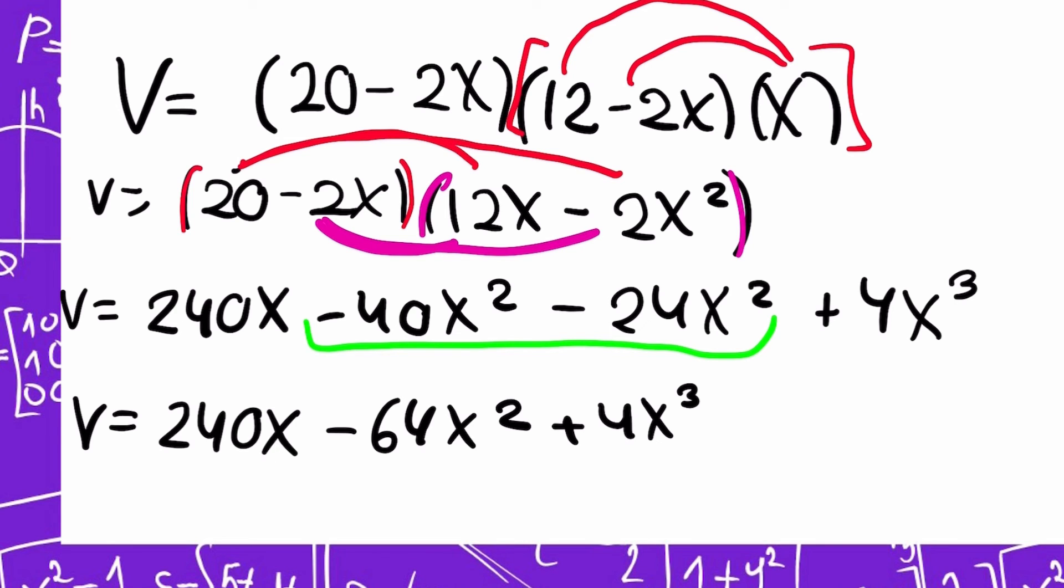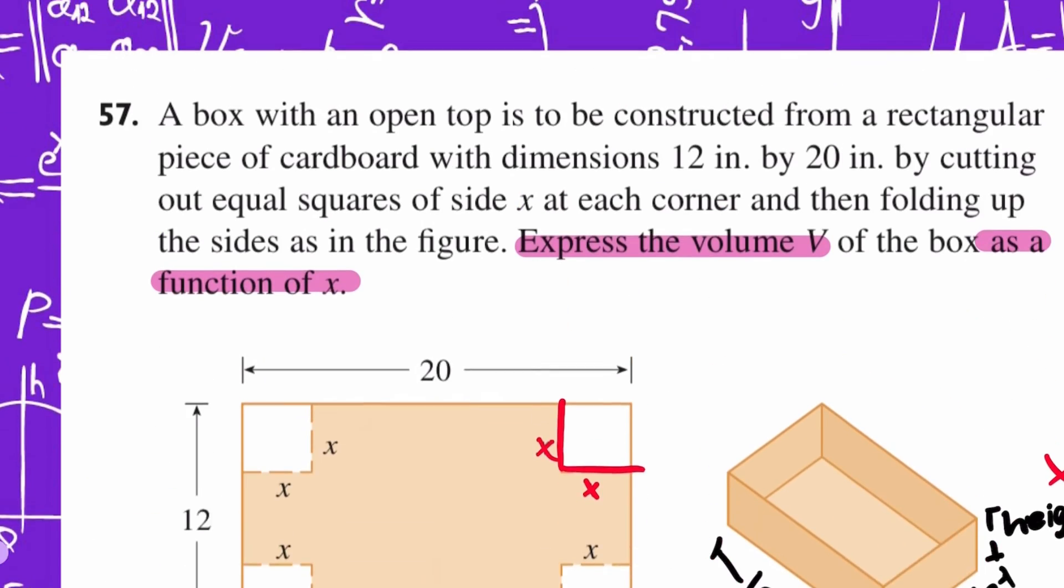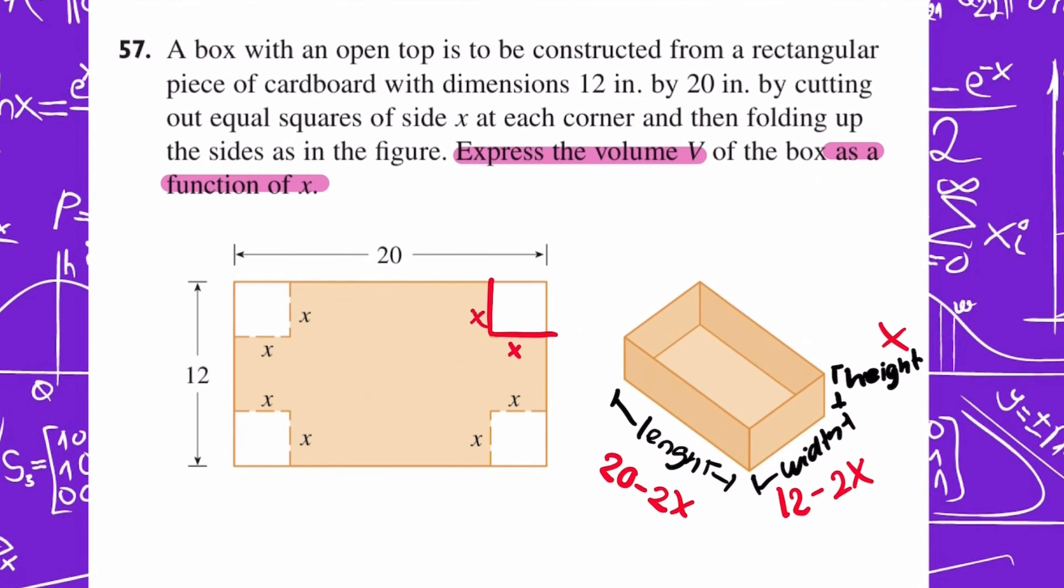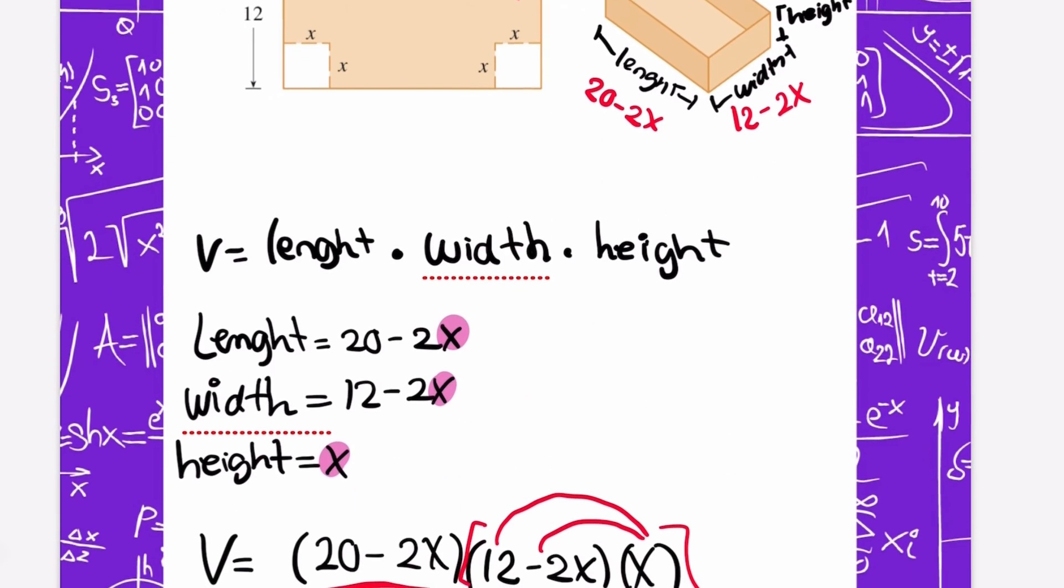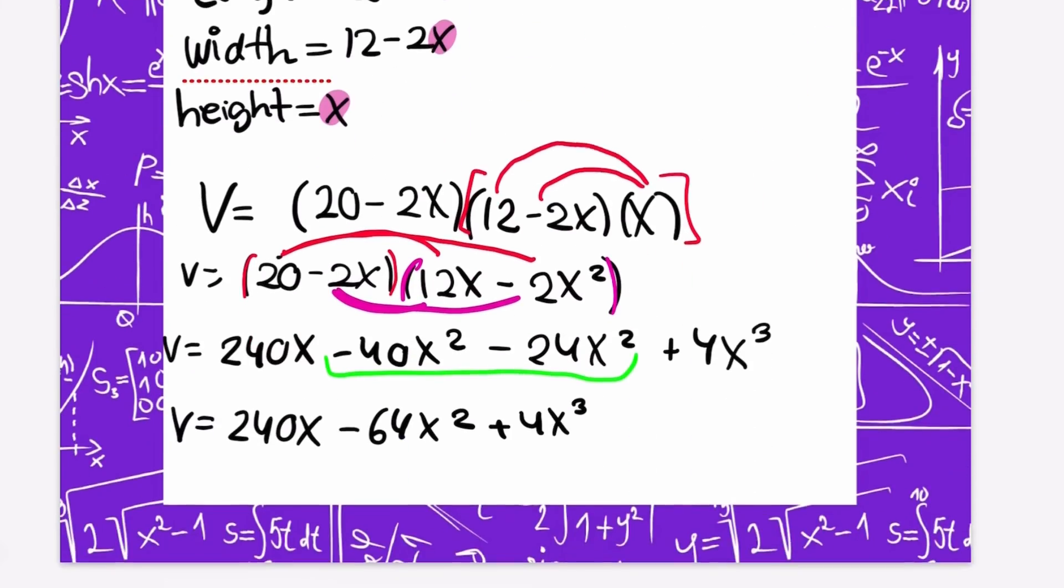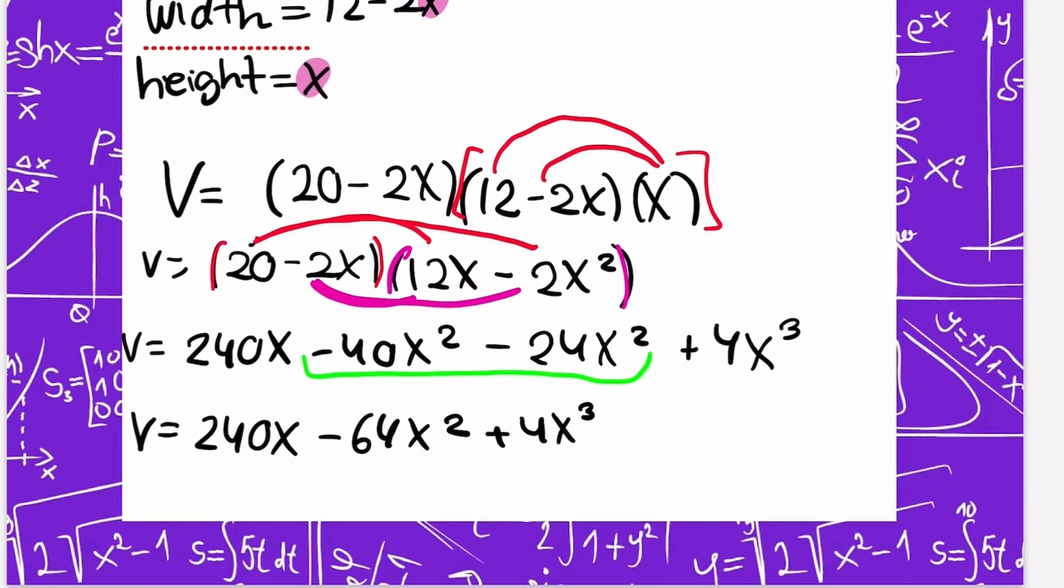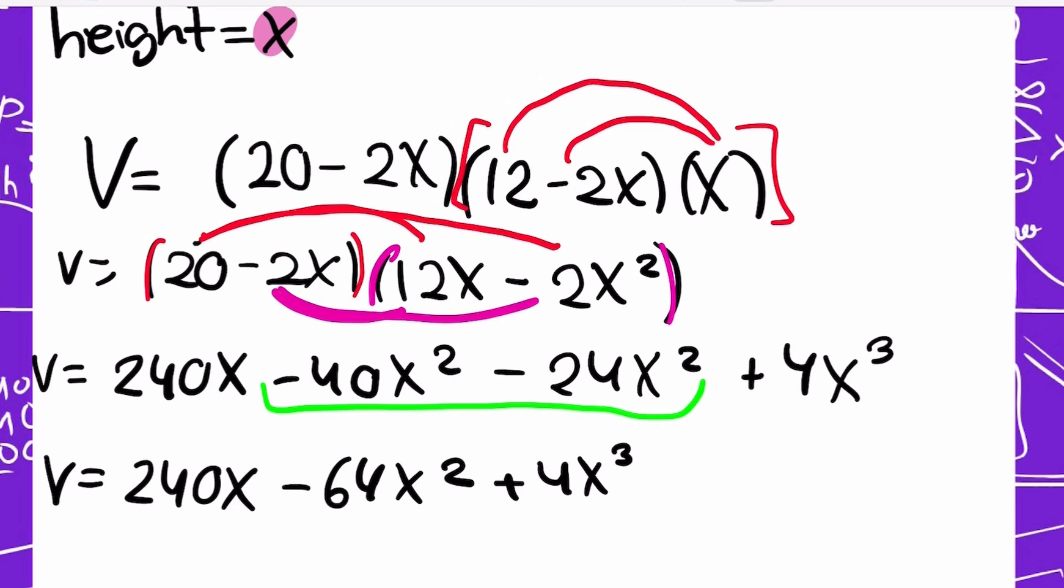I used the formula of the volume because they are asking me for the volume of the box. With the drawing I have, I can use the information of every side: the length, the width, the height. And now I need to find the domain. The domain is x is between 0 and 6. So the answer, actually I'm going to put it in blue, the answer is all of this.